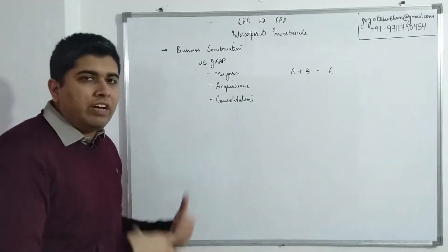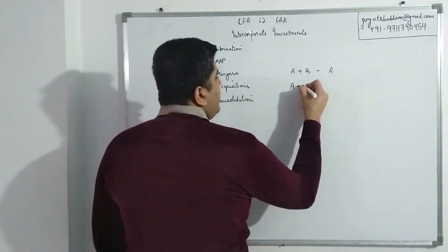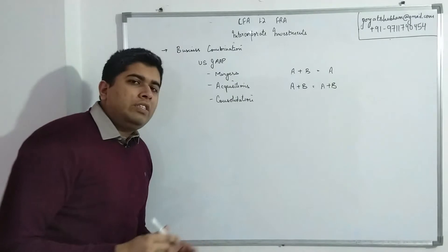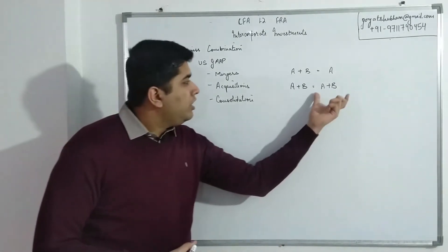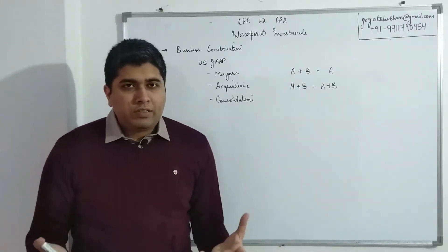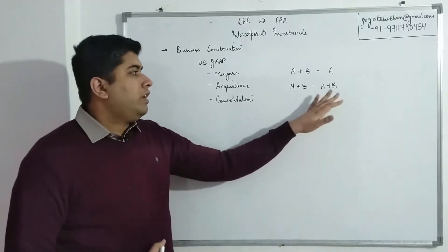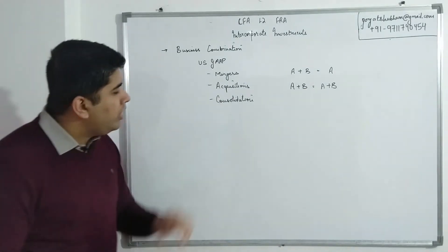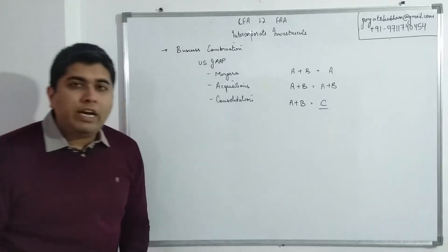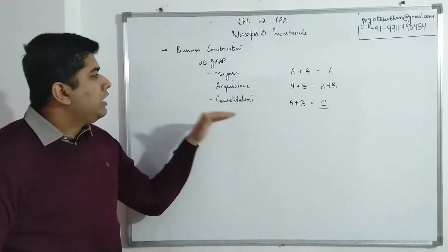In an acquisition, we have two companies before and after the transaction — the only difference is the relationship changes to parent company and subsidiary. Both companies still exist as legally separate entities, but a parent-subsidiary relationship is established. In a consolidation, both companies cease to exist and create a new entity that takes over all the combined operations of the two initial companies.